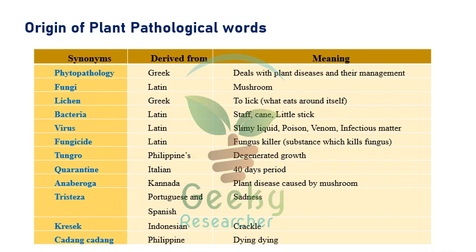Let's start with the origin of pathological words. We have plenty of pathological words like pathology, fungi, lichens, bacteria. We'll see how these words originated and what they mean, because questions like 'phytopathology is derived from which language — Greek or Latin?' may appear. Phytopathology is a Greek word — any word ending with 'logi' is typically Greek.